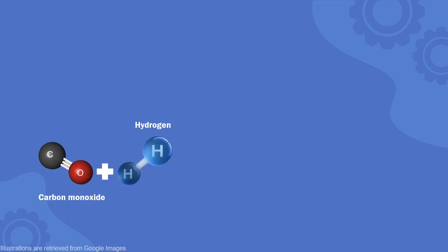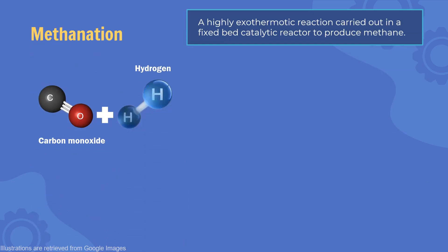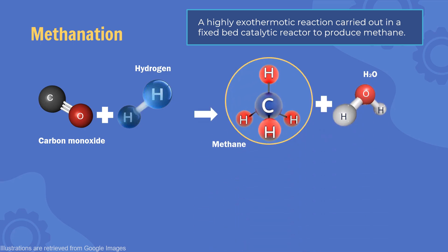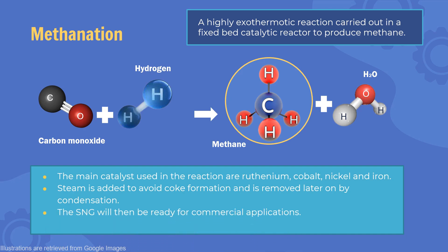Lastly, the adjusted syngas will undergo methanation, a highly exothermic reaction that is carried out in a fixed bed catalytic reactor to produce methane. The main catalysts are as shown. Steam is added in the reaction to avoid coke formation, and later removed through condensation. The SNG is then ready for commercial applications.